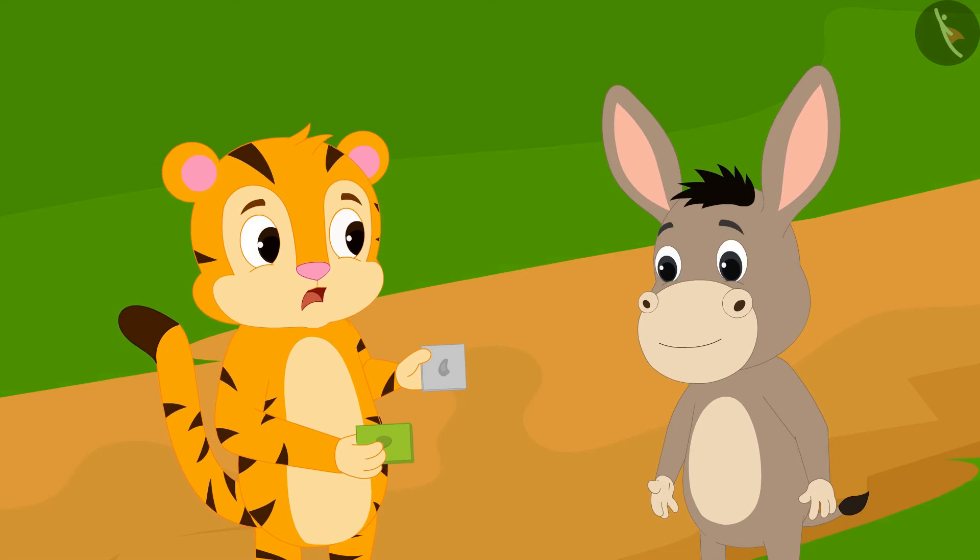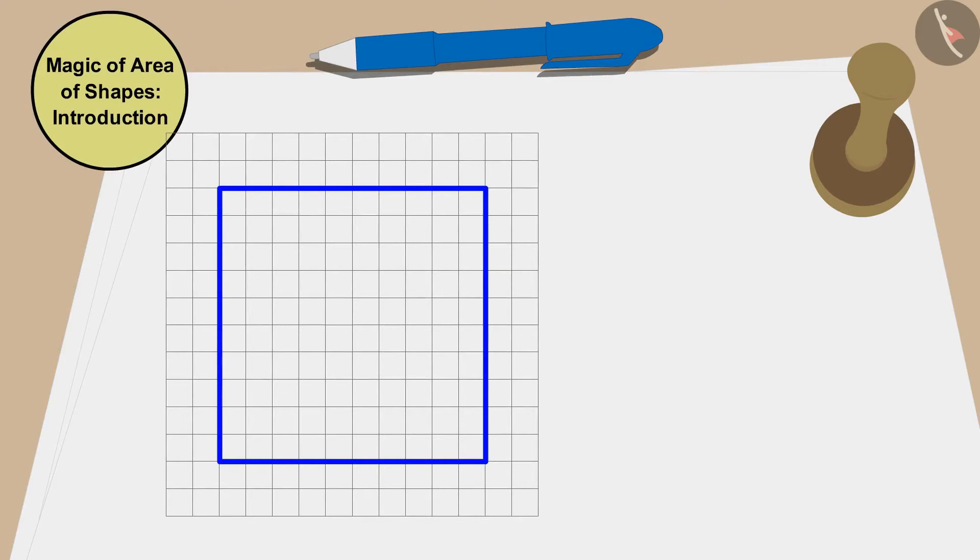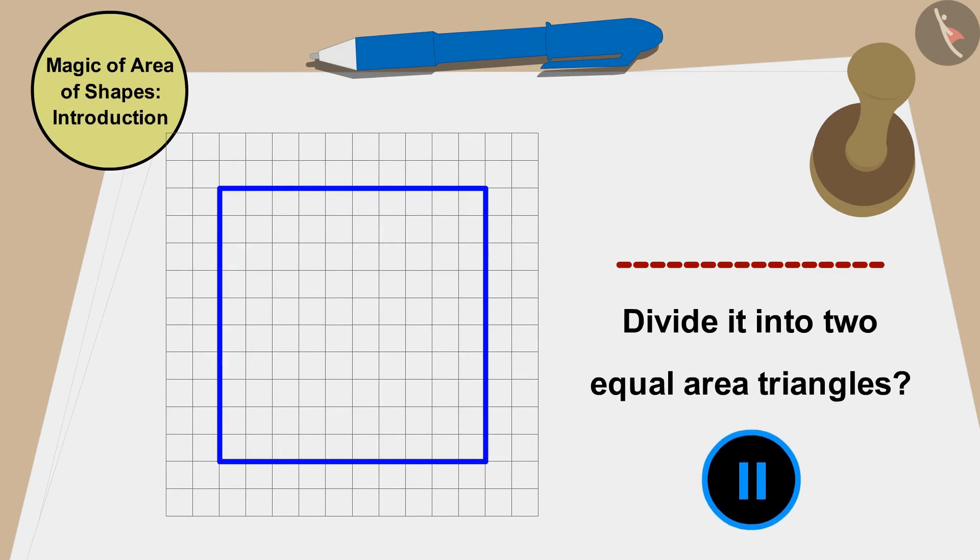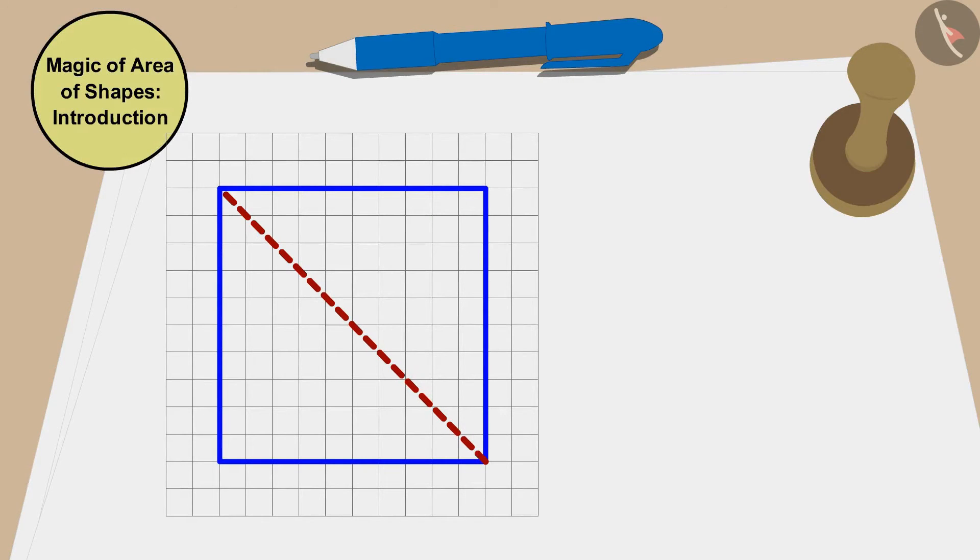Children, can you divide the shape of this cashew barfi by just drawing a straight line and somehow divide it into two equal area triangles? You can find a solution by stopping the video. Well done children. Your answer is absolutely correct.